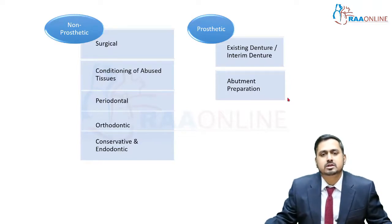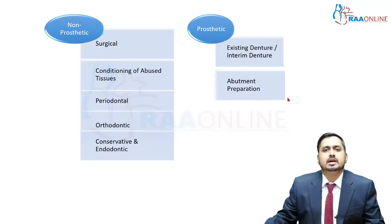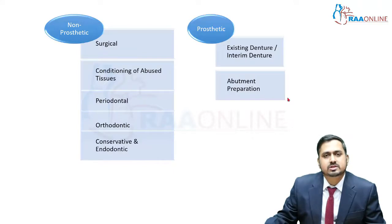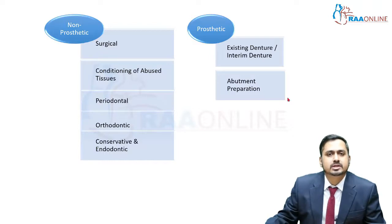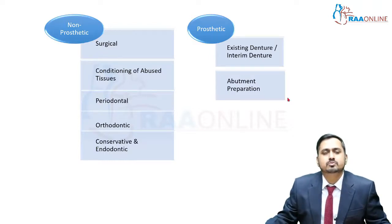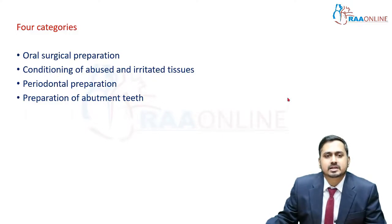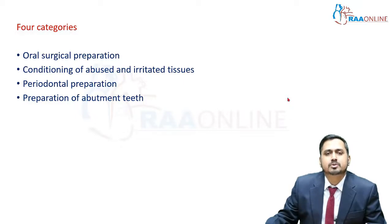In non-prosthetic, it includes surgical treatment, conditioning of abused tissues, periodontal treatment, orthodontic movements, and conservative or restorative treatments. Whereas prosthetic includes initial or old denture correction and abutment tooth preparation. Out of these, there are four main categories: oral surgical preparation, conditioning of abused tissues, periodontal preparation, and preparation of abutment teeth.